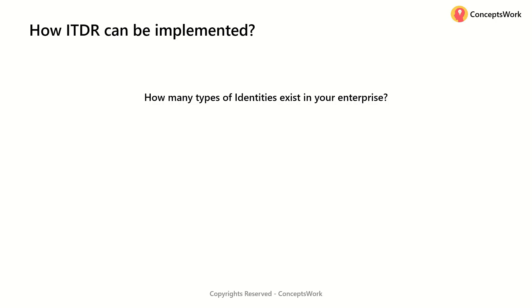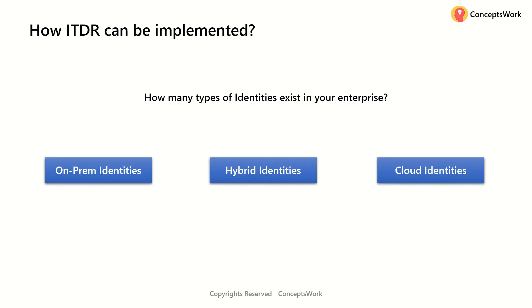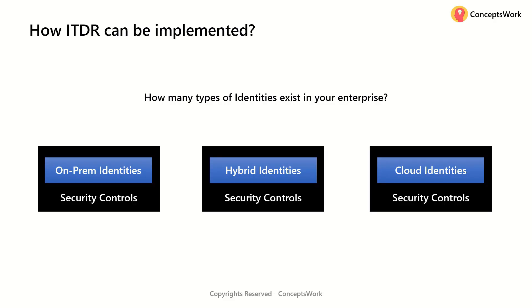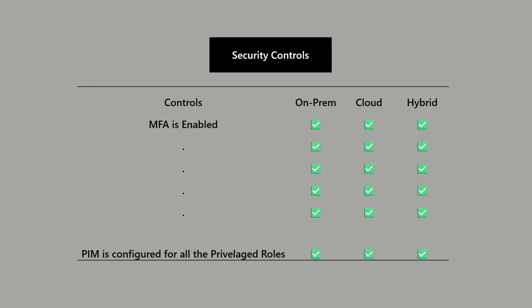Now let's talk about how ITDR can be implemented. The very first question you should ask is: how many types of identities exist in your enterprise? In the majority of enterprises, the answer will be on-premises identities, hybrid identities, and cloud identities. You then need to make sure that security controls are in place for all three identity types.